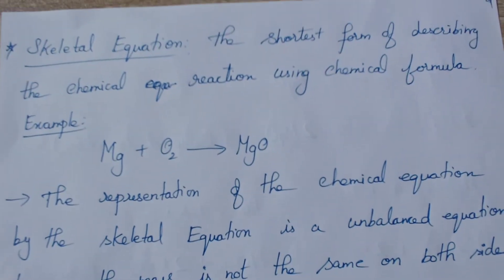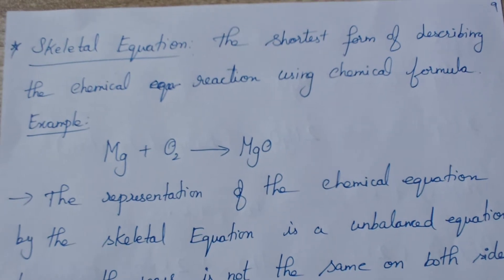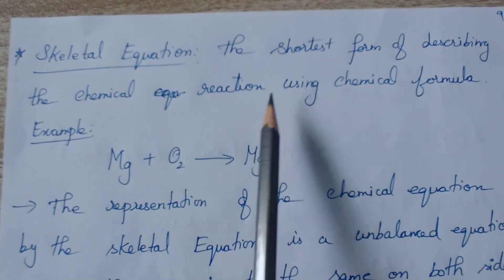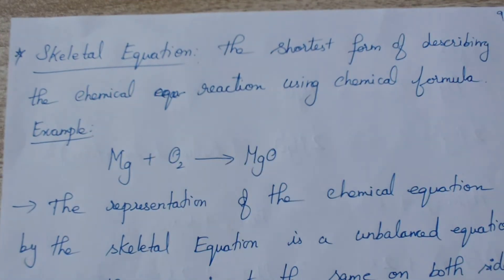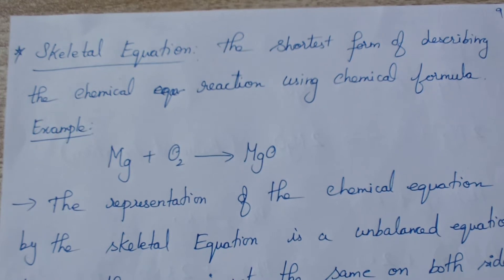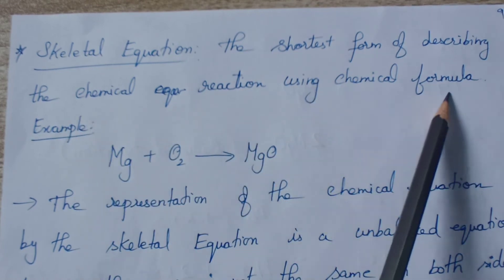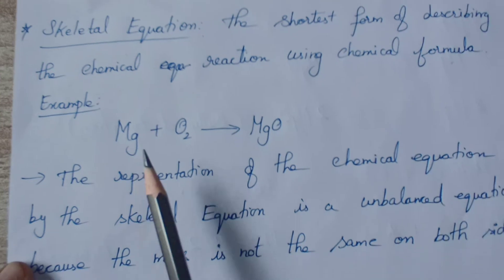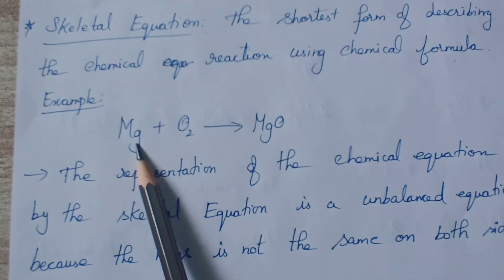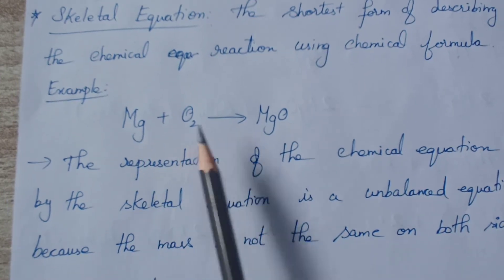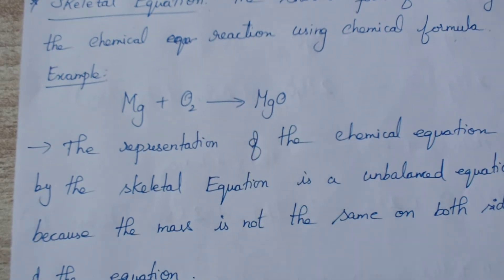We can give the chemical reaction in an even shorter form — that is the skeletal equation. Instead of writing the full word 'magnesium,' we write the formula. The skeletal equation is the shortest form of describing a chemical reaction using chemical formulas. For example: Mg plus O₂ gives MgO.